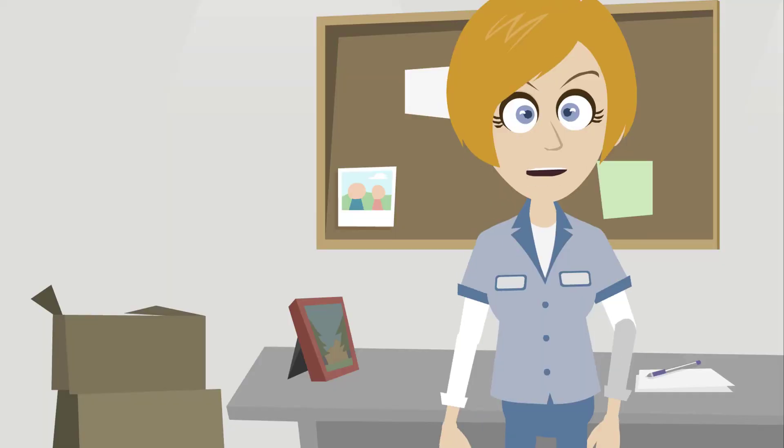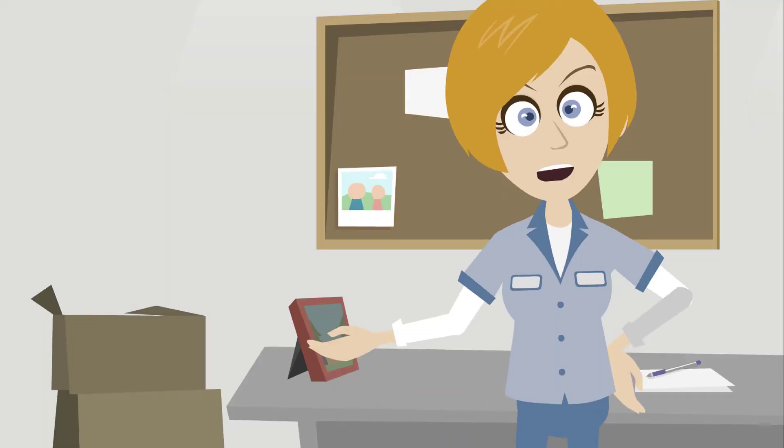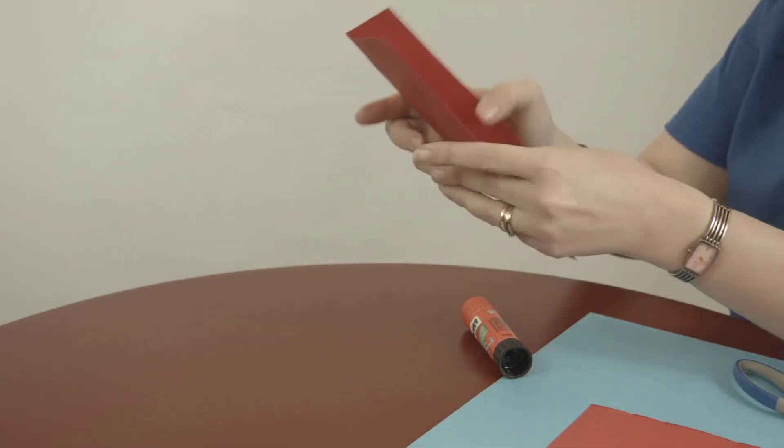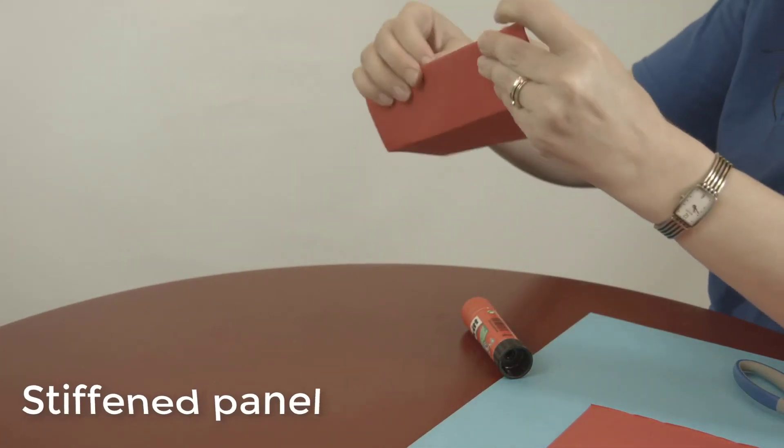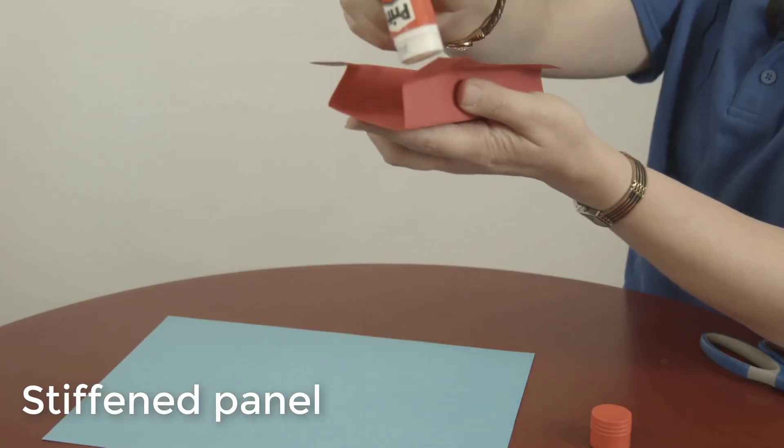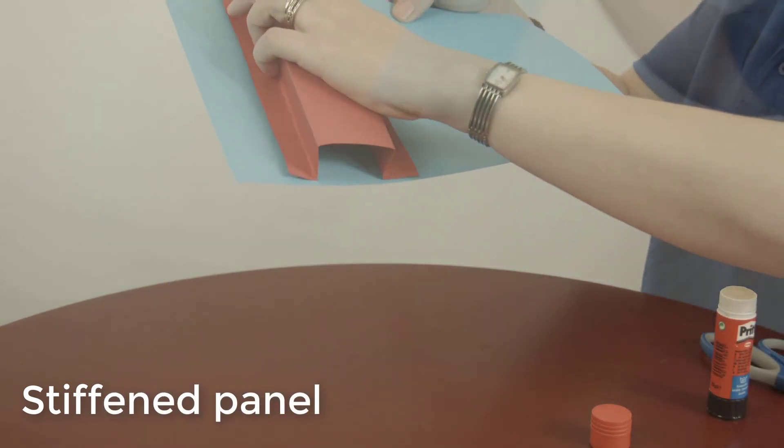We're certainly on the right track, so let's look at one more option, stiffeners. Instead of having a continuous folded sheet, let's place folded sections selectively along the length of a flat piece of cardstock. I'll choose a hat shape for my stiffener, make two of them, and glue them to the cardstock.